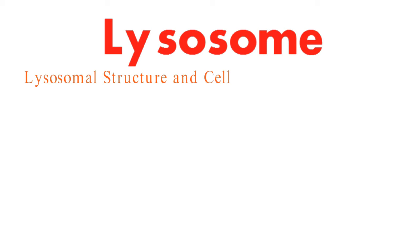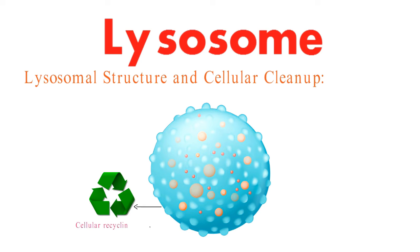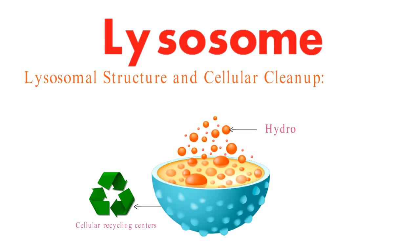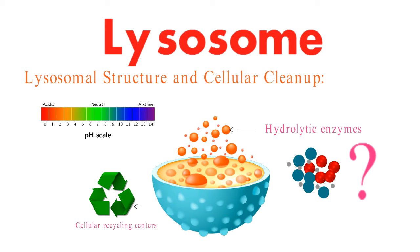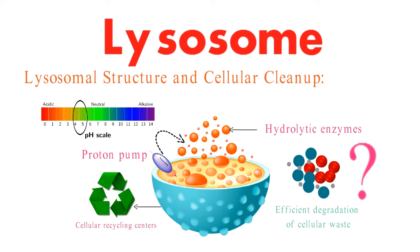First stop is the unique structure of lysosomes. Picture these tiny organelles as cellular recycling centers. They house powerful hydrolytic enzymes that break down complex biomolecules into simpler components. Lysosomes maintain an acidic environment, with a pH around 4.5 to 5, thanks to proton pumps in their membrane. This acidity activates the hydrolytic enzymes, ensuring efficient degradation of cellular waste.